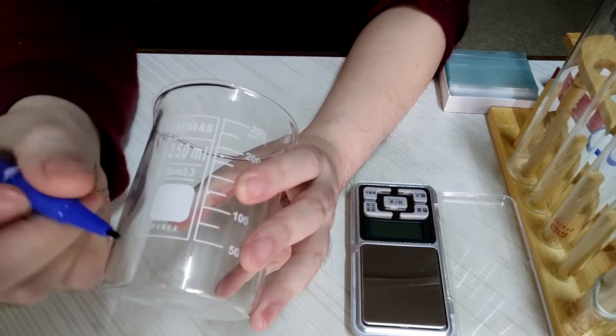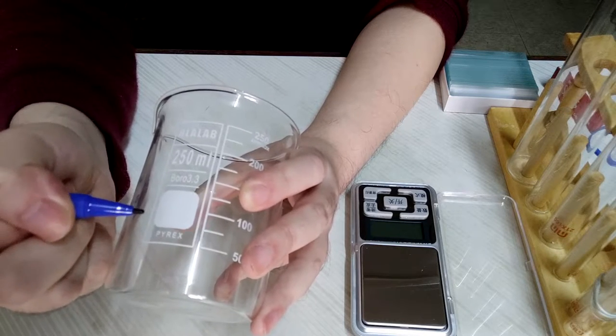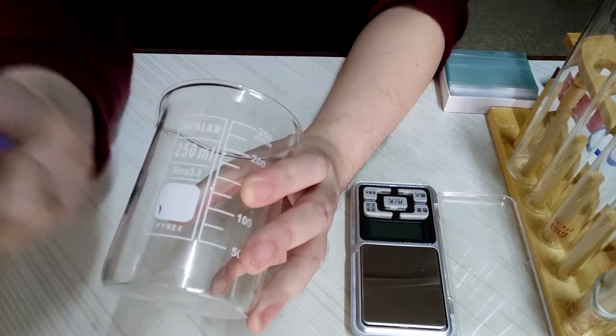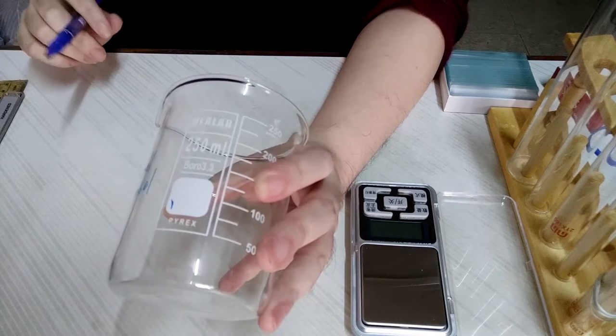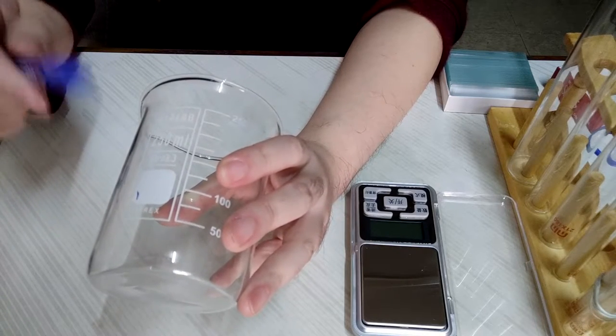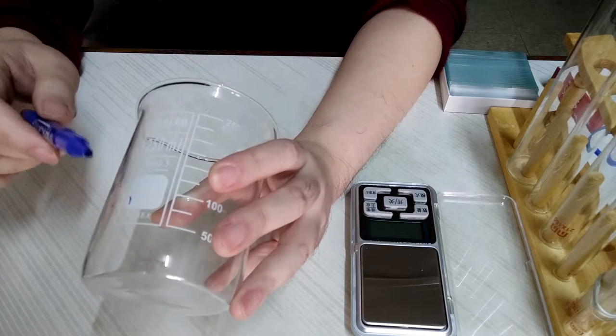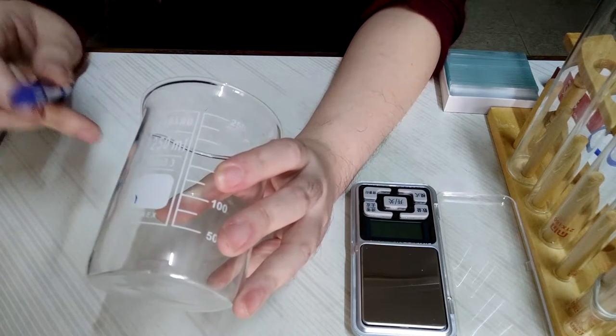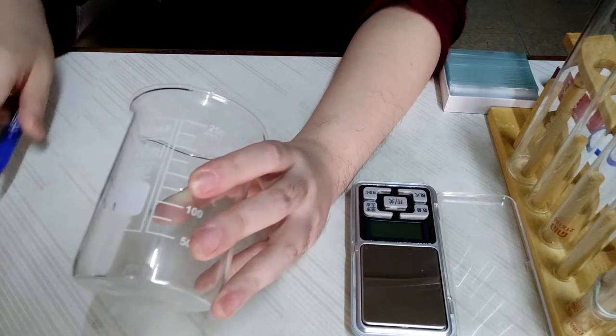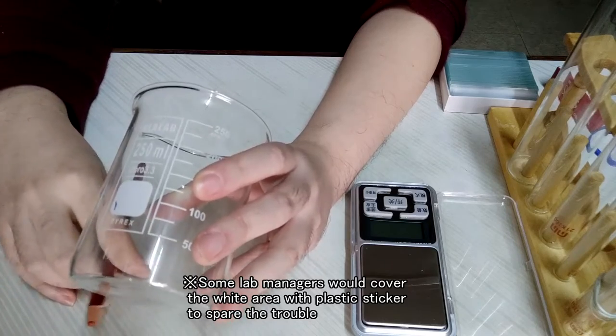If you write something on the white area with ball pen or marker, it will be quite difficult to remove after. And if you leave the marker for a few days, it will be nearly impossible to remove completely. So what is the white mark for? Actually, it is for pencil or something called grease pencil.